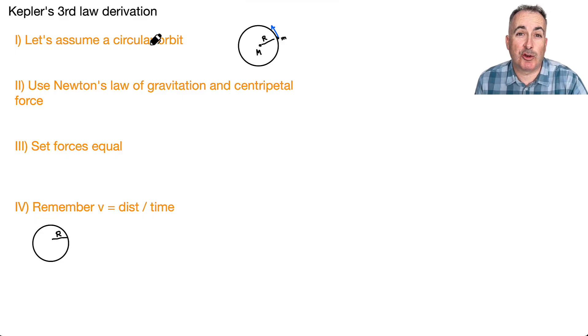To derive this third law, we're going to assume a circular orbit. This satellite or planet is going around this other object M. Lowercase m is going happily around in a nice circle. Let's look at Newton's universal law of gravitation and centripetal force. We're going to need those two equations. Fg equals GMm over R squared. The centripetal force is mv squared over R. There's my two equations I'm going to need.